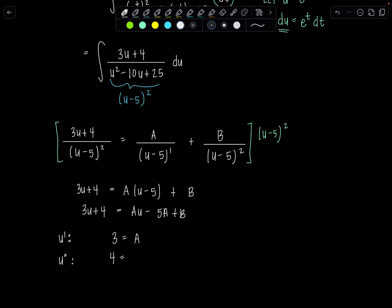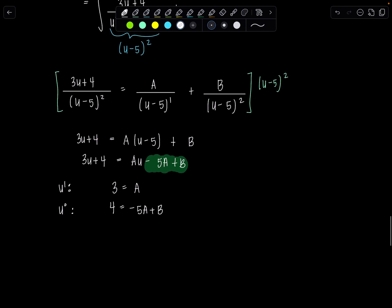And then u to the zero, aka your constant term on the left, is 4. I'm going to set that equal to the terms that have no u's in them on the right, namely negative 5A plus B. Well, I already know A is 3, so 4 equals negative 15 plus B, so B is 19.